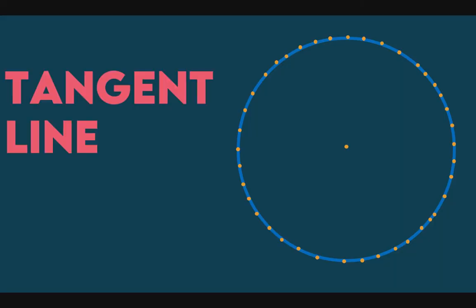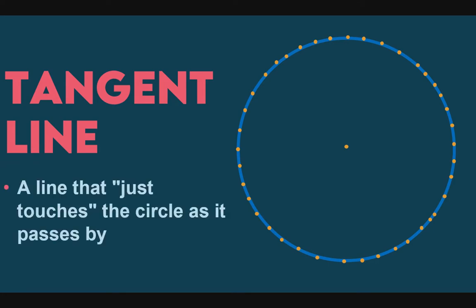Let us review our definition for tangent. A tangent line is a line that just touches the circle as it passes by. Ang tangent line ay isang linya na dumadaan o dumikit lang ng isang beses sa circle. As we can see here, nagtouch lang siya sa iisang point — hindi siya pumasok, hindi siya lumabas, lumikit lang yung ating green line sa ating circle. That point is called the point of tangency.